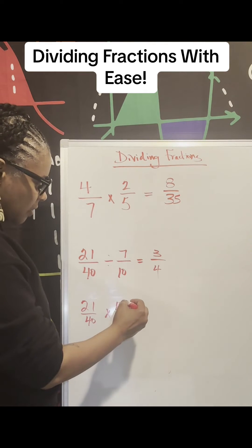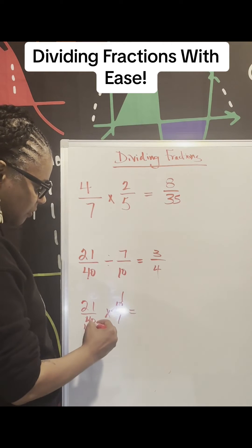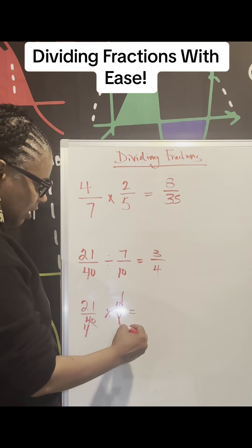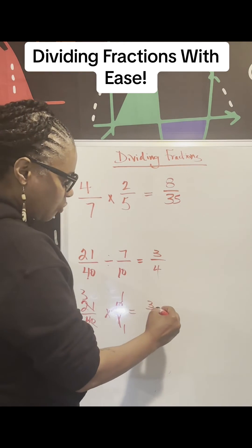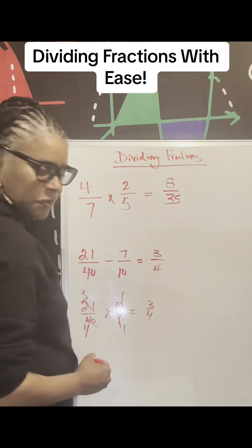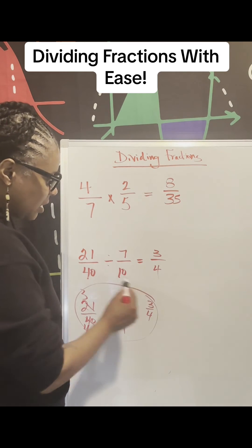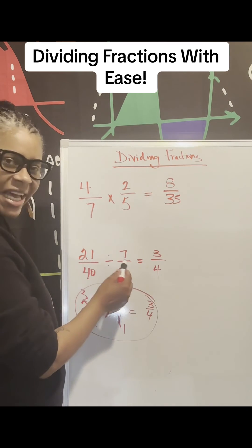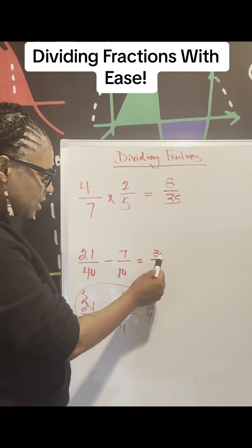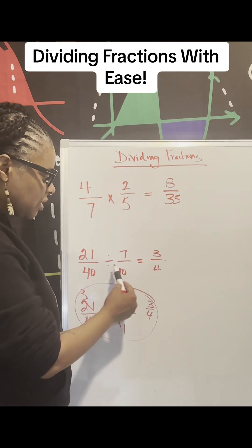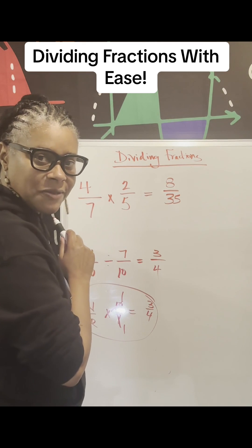And when we do that here, I can cross-cancel: that's going to be 1, that's going to be 4, that's going to be 1, that's going to be 3 — and I end up with 3 over 4. So you don't have to go through all of that if it works out nicely: 21 divided by 7 is 3, 40 divided by 10 is 4. The same way you can do that with multiplication.